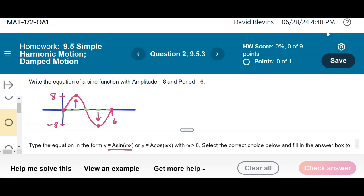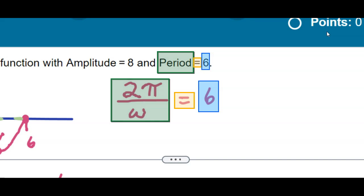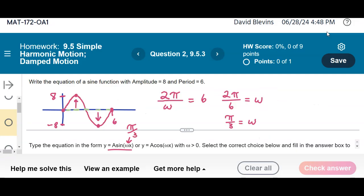The period of a sine curve is 2π divided by whatever this Greek letter omega is. In this case, it equals 6. So doing a little algebra, multiply by ω, divide by 6, we get 2π/6 equals ω, and 2/6 reduces to 1/3. So ω is π/3.